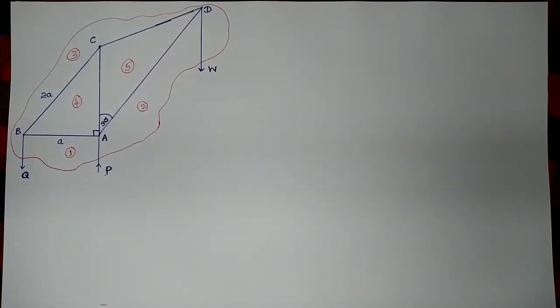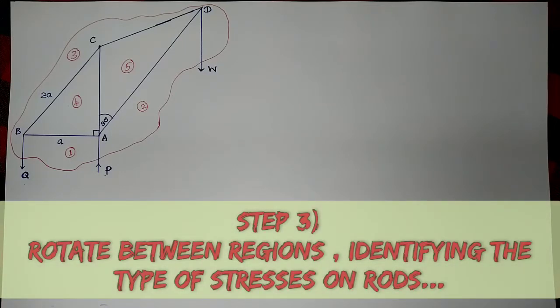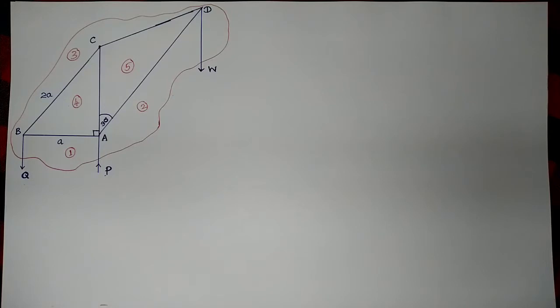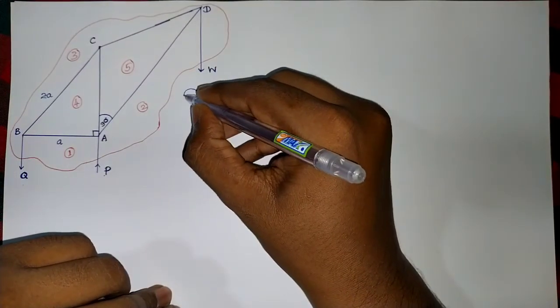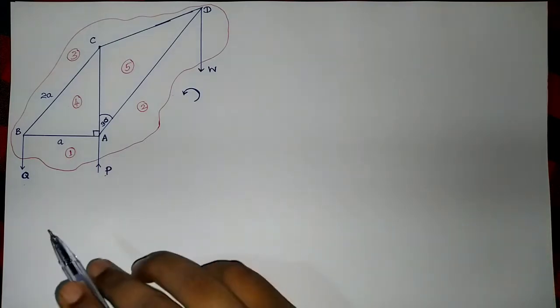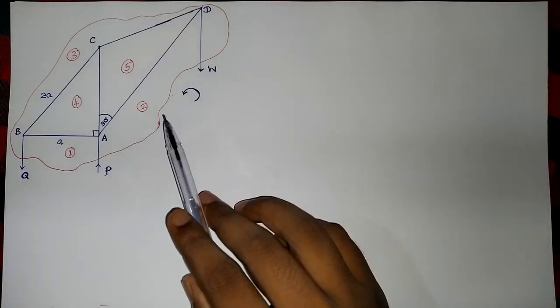The third step in framework problems is to rotate clockwise or anticlockwise between regions, identifying the forces on rods. I have selected point B as my starting joint. You have to decide the rotating sense — for this explanation I am going to rotate in the anticlockwise direction. Mark this in your answer script, because at each and every joint in the stress diagram you have to follow the same rotating sense.